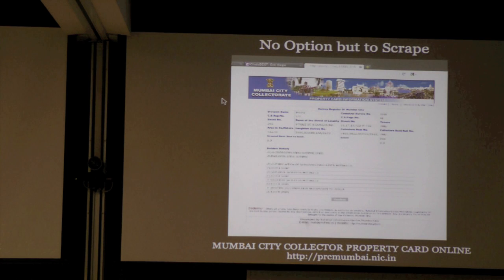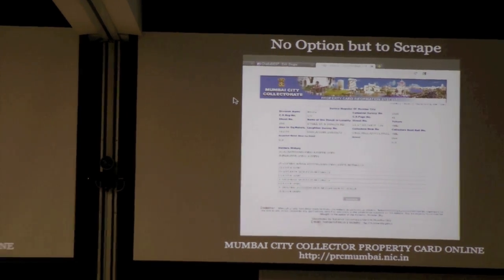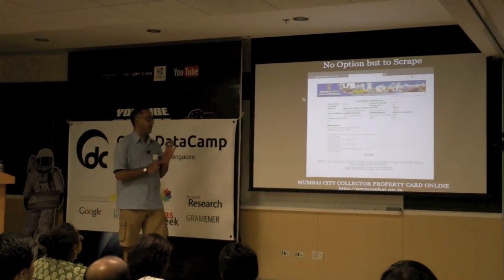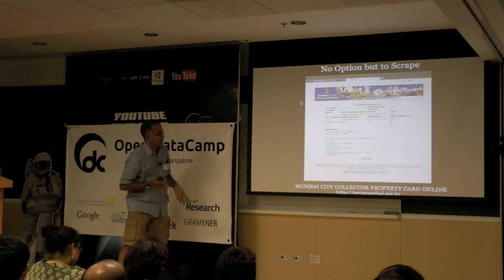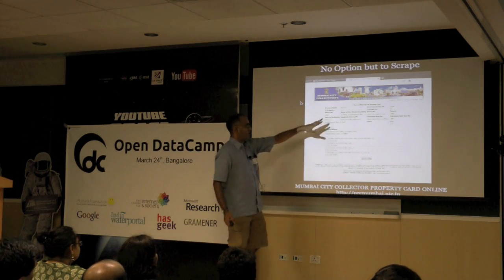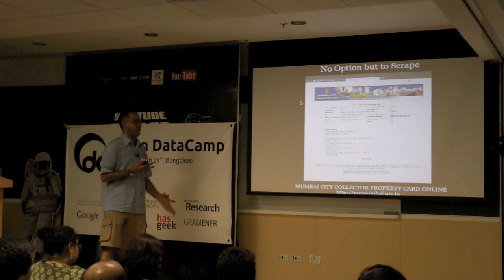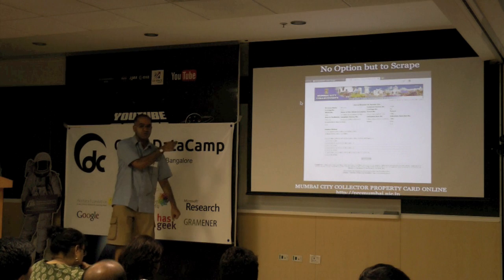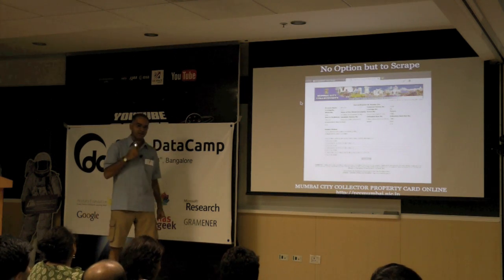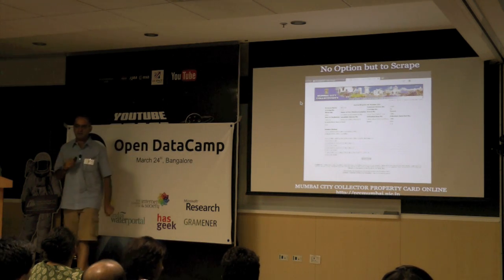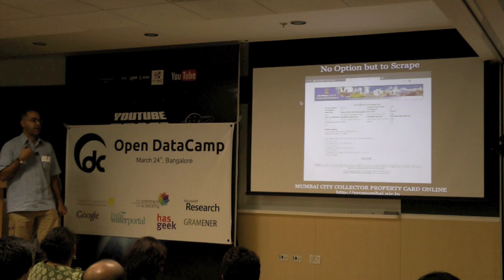Before you could actually walk into a government office with a pen drive and they would give you something, we had no other option but to write custom scripts to scrape data off government websites. This is an example: a website for getting your property card online — a really badly designed, totally insecure NIC website. You type in your cadastral survey number and it gives you an entire ownership history going back to the old British surveys of the 1870s and 1930s. What I realized is that every one of these pages has a unique URL, so I could write a script, download all of them, and put them into a searchable database.